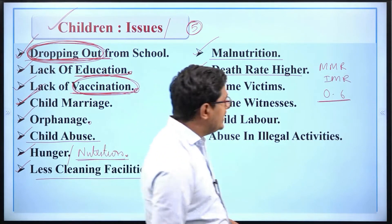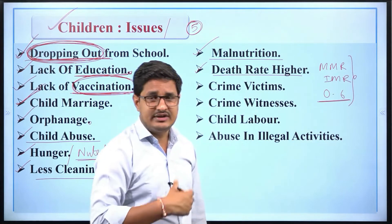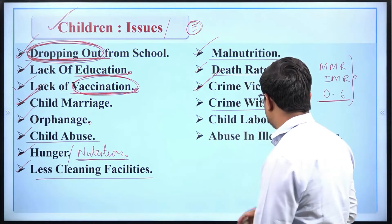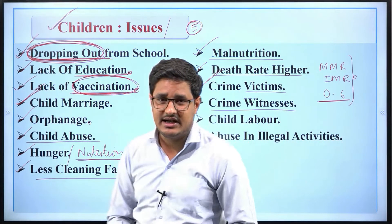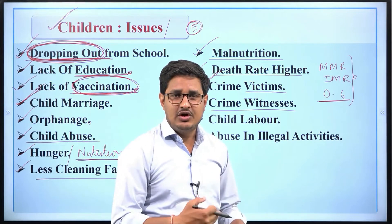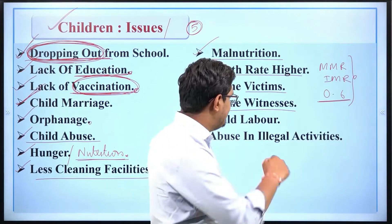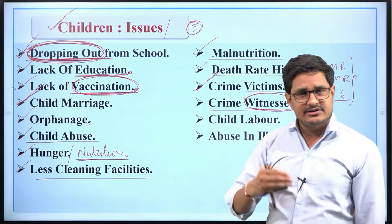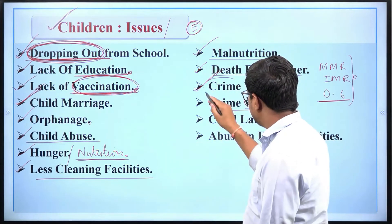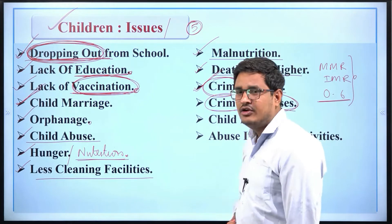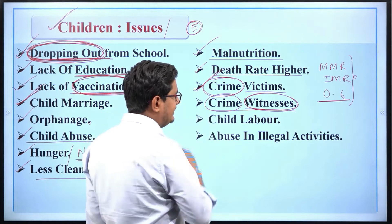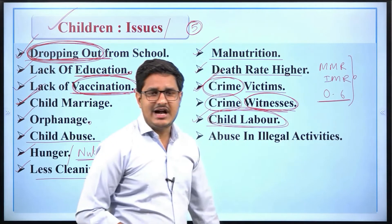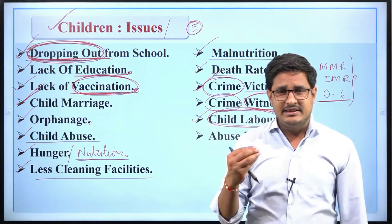The reason is that not enough attention is paid to nutrition in India, and India's basic health infrastructure is also not very good. Then there are crime victims and crime witnesses. Our legal system works in such a way that if someone is a victim, it takes a long time to get justice. If a child is both a victim and a witness, there should be a speedy trial for child-related cases, but in our country the arrangement for speedy trials for child victims or witnesses is not adequate.